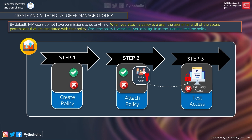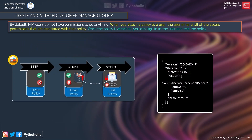Looking at the actual policy, you can see we have an Allow effect, the resource is set to star, and the actions provided are: generate credential report, iam:Get*, and iam:List*. With these three actions, the user will be able to log into the AWS console with read-only permissions. They will not be able to create or update any policy — they can only list and read policies, view permissions, and generate the credential report. This is one of the ways we can create and attach a customer managed policy to a user.